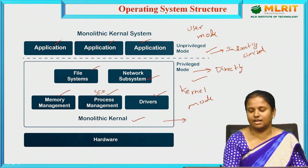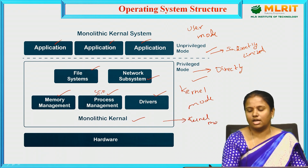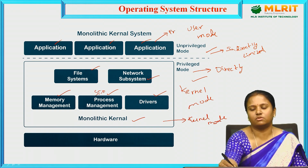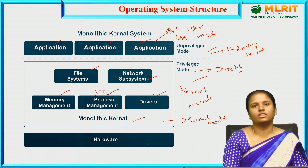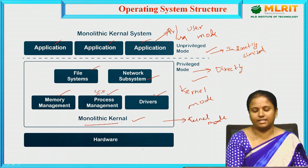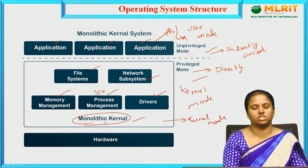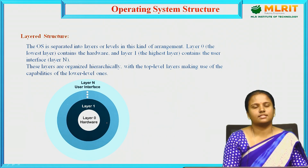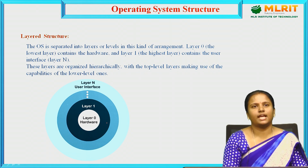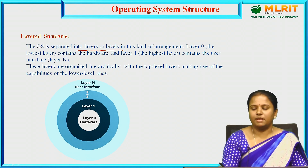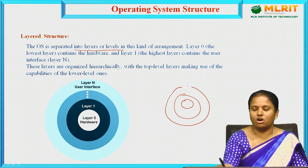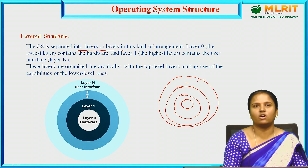This kernel mode, or privileged mode, and the unprivileged user mode are all accessed by the hardware. The interface between the application and the hardware through the monolithic kernel defines the monolithic kernel structure. Coming to the next structure, we are going to see the layered structure, where the operating system is separated into layers or levels, consisting of 1, 2, 3, or N number of layers.